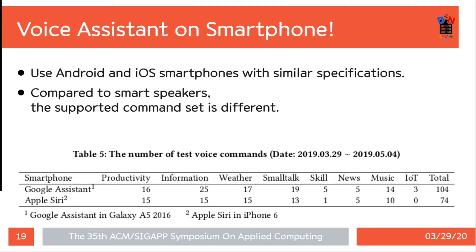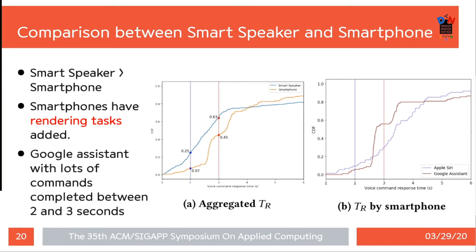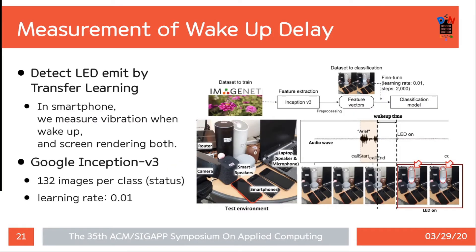Since virtual assistants are most commonly used in smartphones today, we also tested virtual assistants on smartphones. We used the Galaxy A5 and iPhone 6 to match similar hardware specifications. Compared to smart speakers, the set of supported commands is different. Command response time was measured by analyzing sound, video, and packet data, as with smart speakers. In general, smartphone virtual assistants were slower because they rendered a visual UI, rather than simply providing voice responses. Among Google Assistant and Siri, Google Assistant performed better, with many commands completing in 2 to 3 seconds.